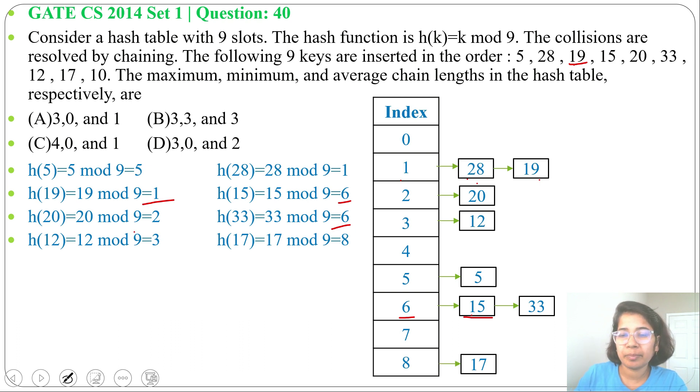Next 10, 10 divided by 9, remainder will be 1. At index 1, we already have 28 and 19. We'll add a pointer from 19 to 10. Now at index 1, 3 keys are present: 28, 19, and 10. Now maximum chain length is 3.